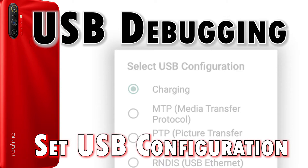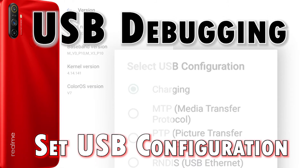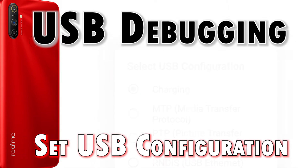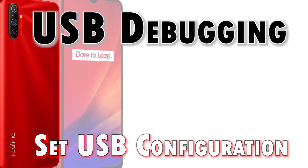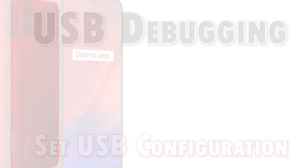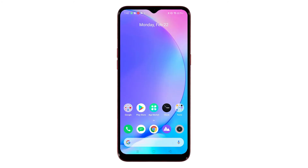To file transfer instead of charging. Before you begin, make sure that developer options or developer mode is already unlocked or enabled on your device, otherwise you won't be able to access the hidden features including USB debugging and USB configuration. Once you've got everything set, you can go ahead and carry out these steps.